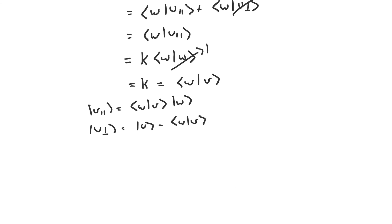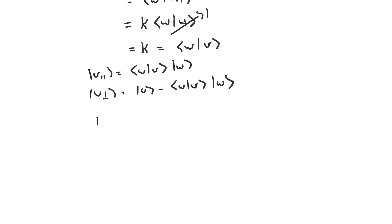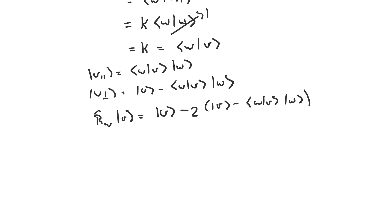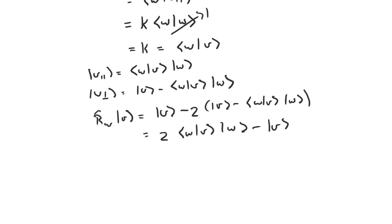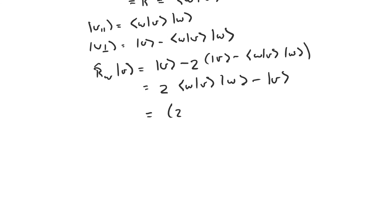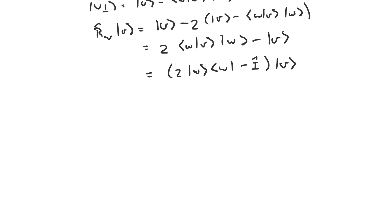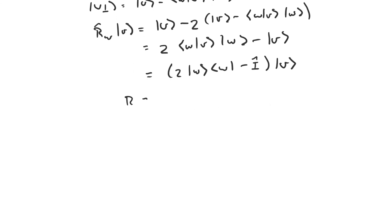So the reflection operator r-sub-w acting on v gives v minus 2 times v-perpendicular, which is v minus 2 times the quantity (inner product of w and v) times w. We can simplify this to 2 times (inner product of w and v) times w minus v. Written as an operator acting on v, that operator is 2 times the projection onto w minus the identity operator. So r-sub-w equals 2 times the projection onto w minus I.